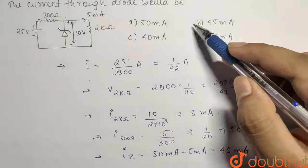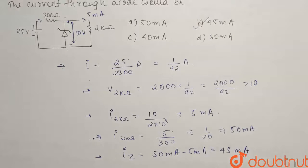So for the given question our correct answer would be option B, that 45 milliamperes will flow through the Zener diode. Thank you.